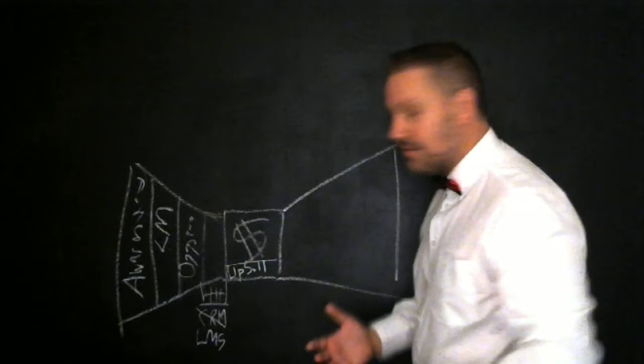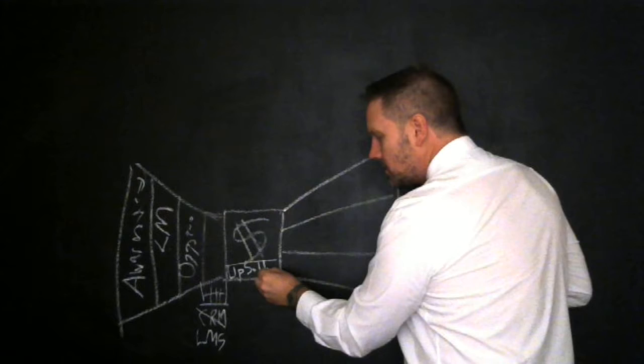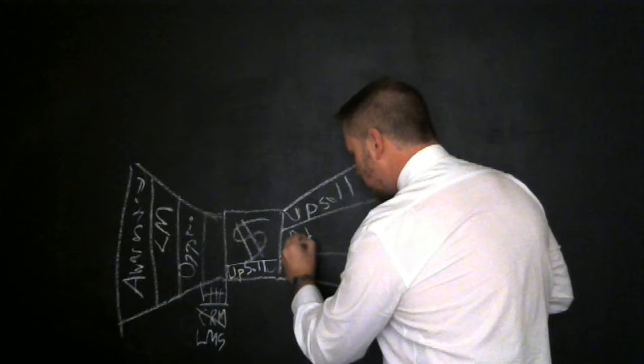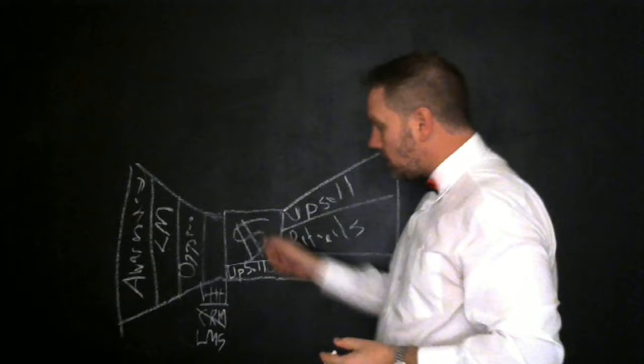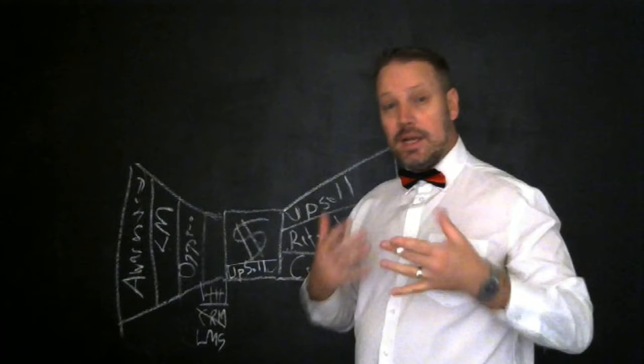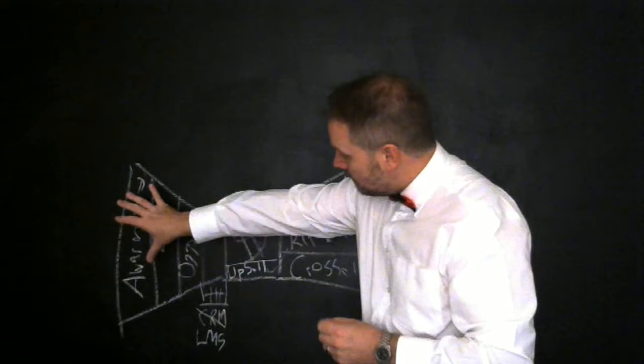There are three key funnels that you need to put in place for when a client becomes a client. The first one is, if they didn't take that upsell, you want to offer them an upsell yet again. Then you want to ask for referrals. Do they know of other people that would be interested in the products and services that you sell? And the last thing you want to do is cross-sell. Basically what that means is that many times the client just buys one product, but you can offer them a range of different and more products that will enhance their purchases.